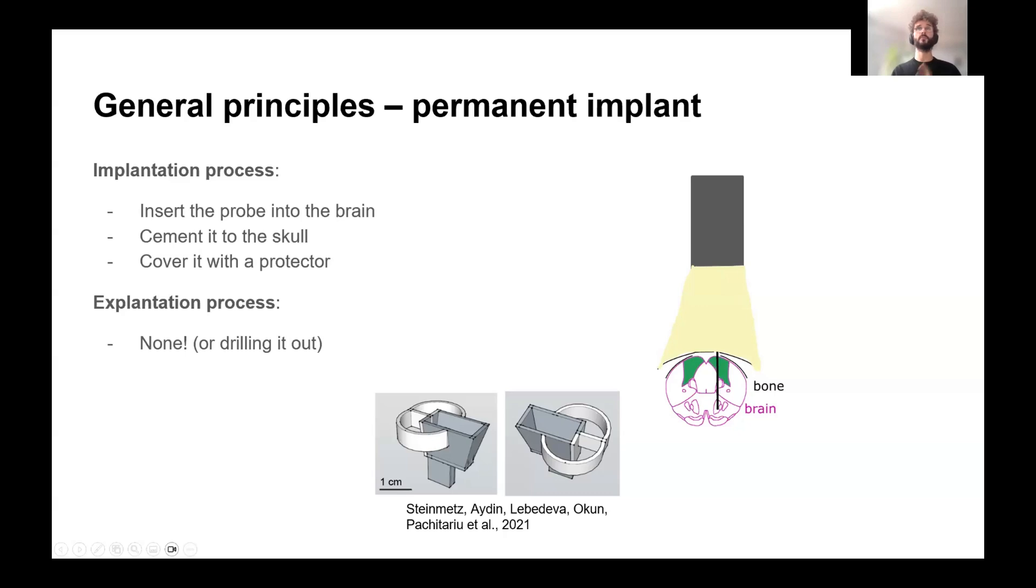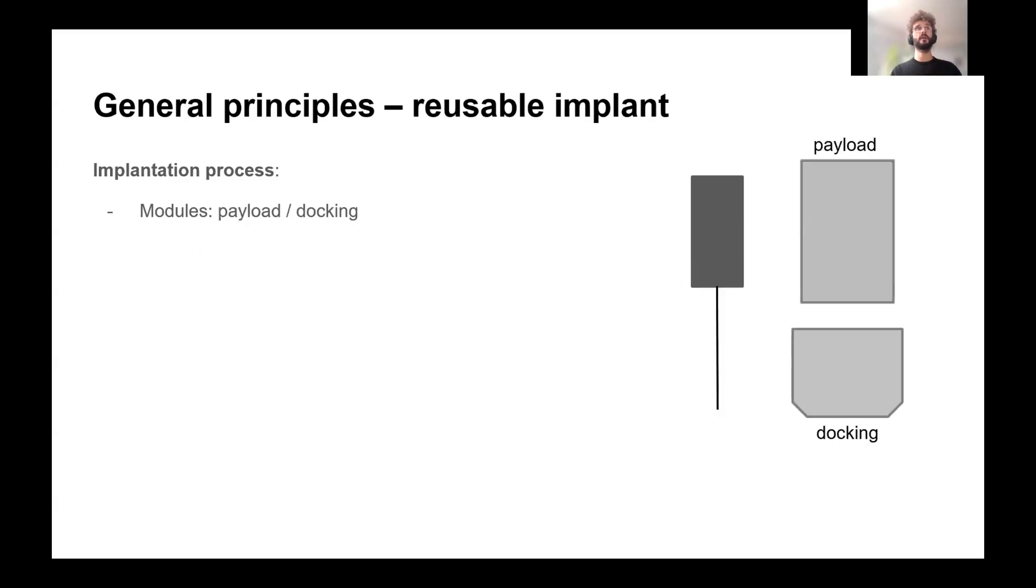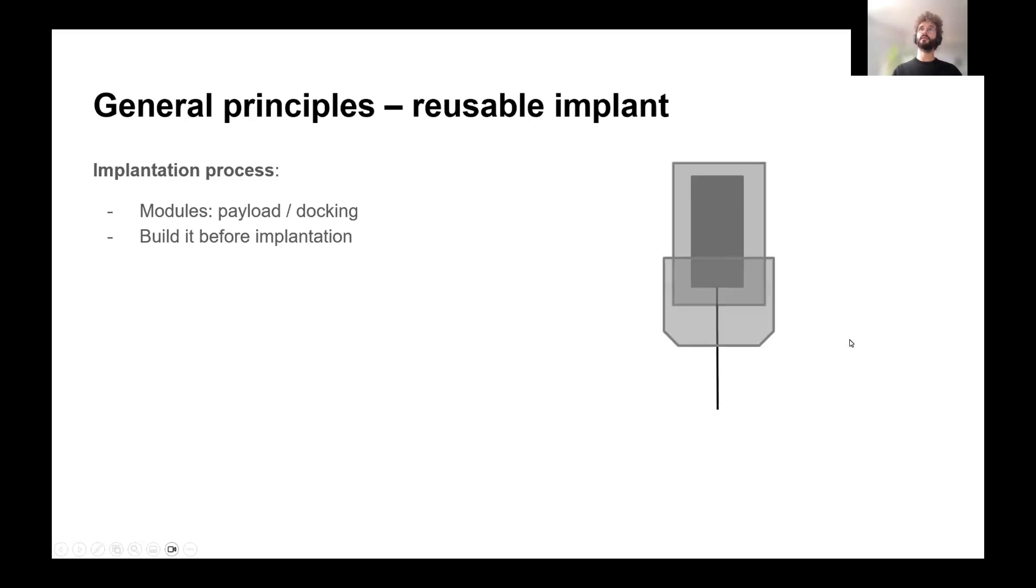Okay. So now I'm going to move to the reusable implants. And they work usually in the same way. There's a bunch of those. You'll see I've put them all on the same slide, all that I know of. And they work with similar principles. And the main principle is you have these kind of modules here. So this is still the probe. And these are two modules that you can either 3D print or order from some company. And there's a payload module that you're going to assemble with the probe. And this is going to be like a permanent assembly. And there's a docking module here.